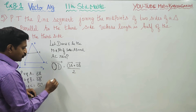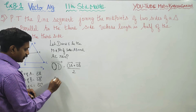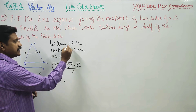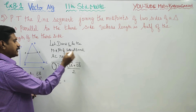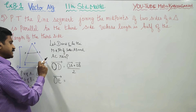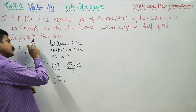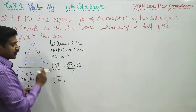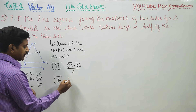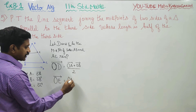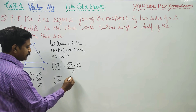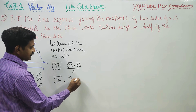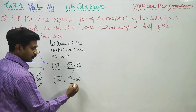Then I am going to find my OE vector. E is also the midpoint of AC. So the position vector OE equals OA vector plus OC vector by 2.